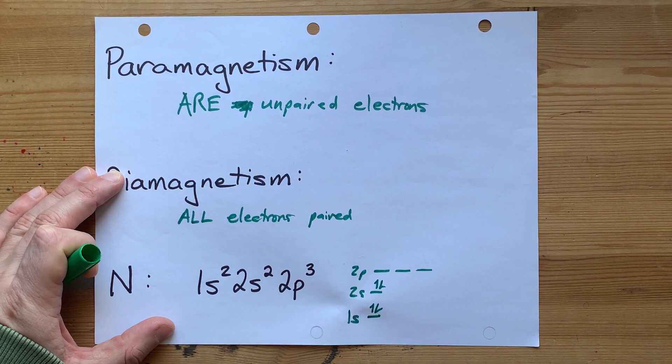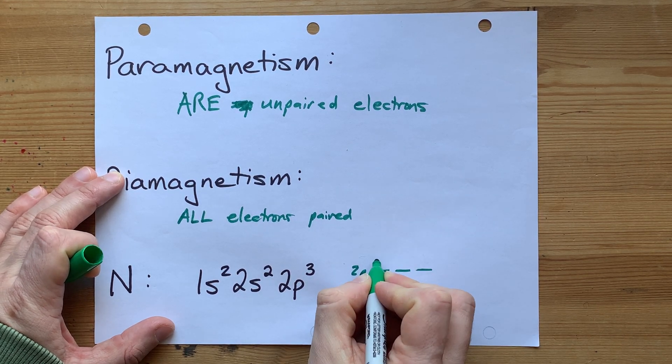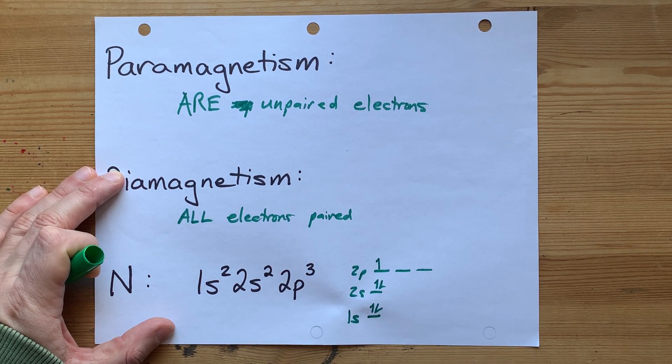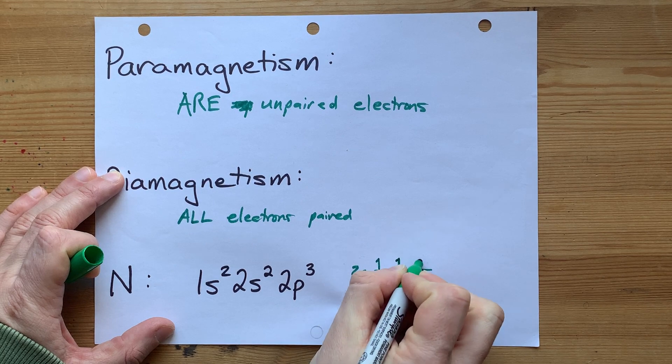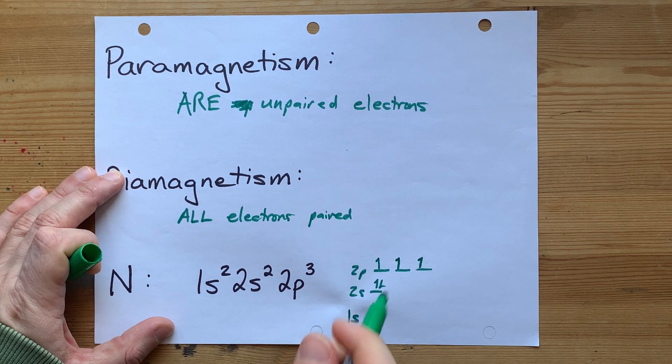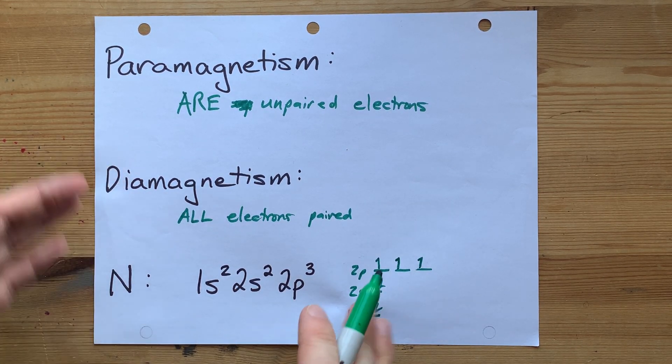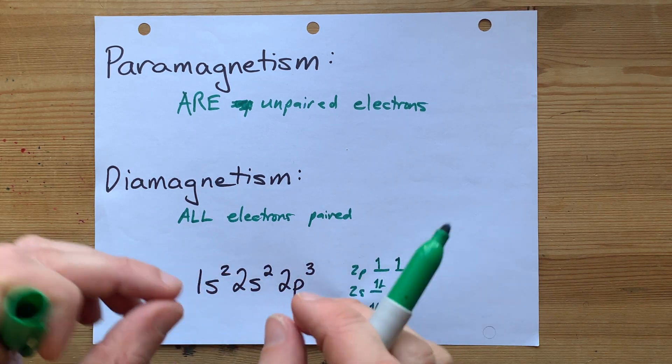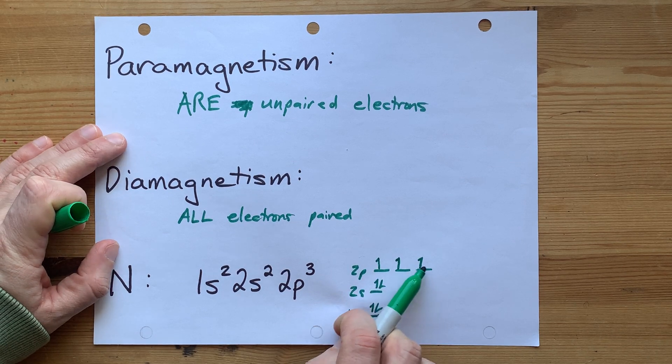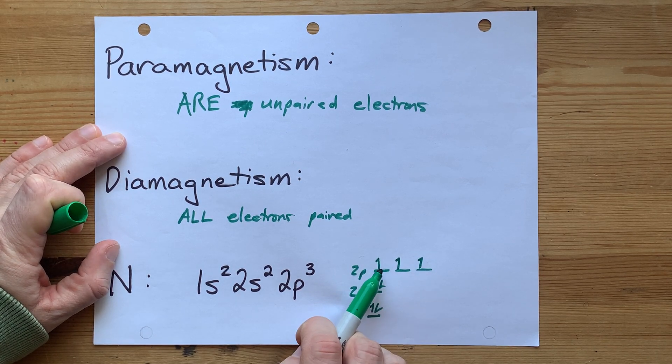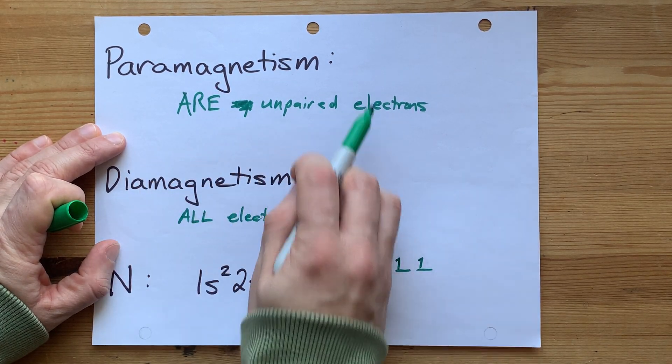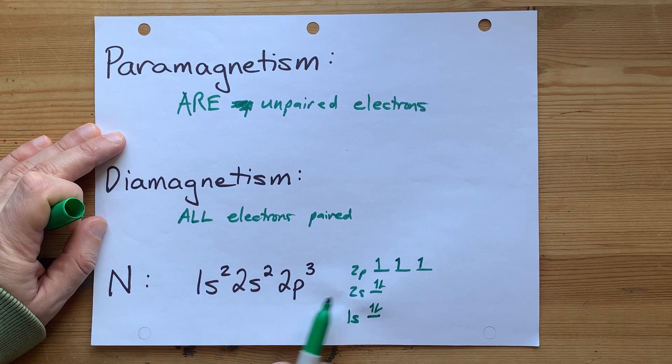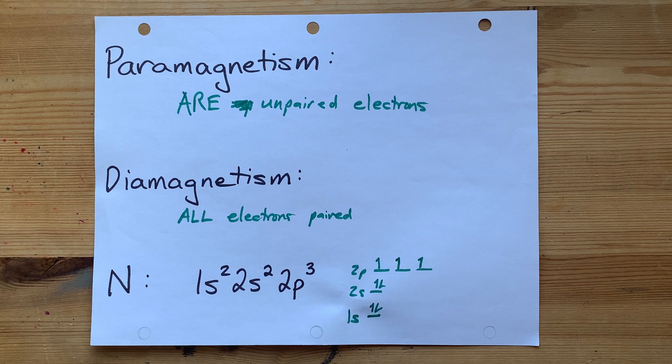And three electrons in the 2p. I think it's Hund's rule that says you spread them out before you double them up. And so I'm going to spread out those three electrons. Here is my electron configuration diagram for ground state nitrogen atoms. You'll notice that these electrons here are unpaired, and so there are unpaired electrons in ground state nitrogen. And so we would say that this particle is paramagnetic.